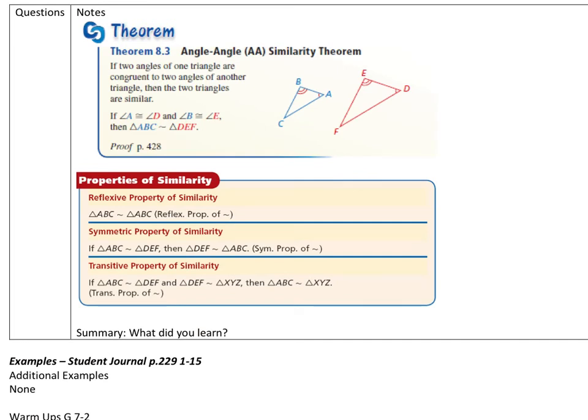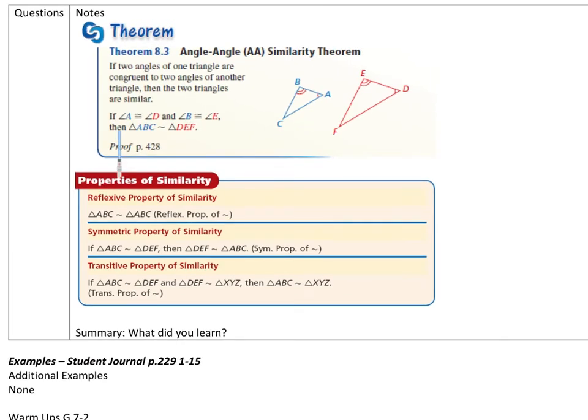You already know similarity, and over here, if you have two angles of one triangle congruent to two corresponding angles of another triangle, then the triangles are similar. So what does that mean?